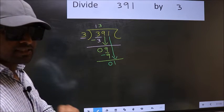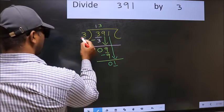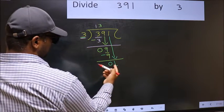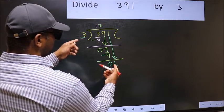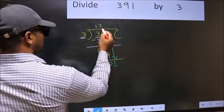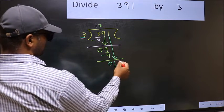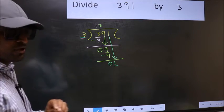And the mistake is this. Here we have 1 and here 3. 1 is smaller than 3. So what many do is they directly put a dot and take 0, which is wrong.